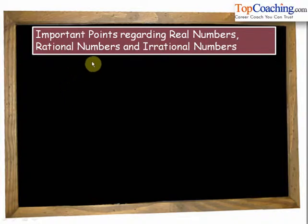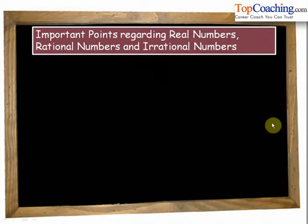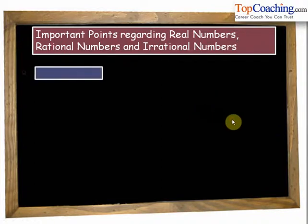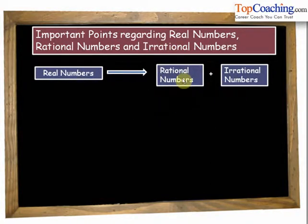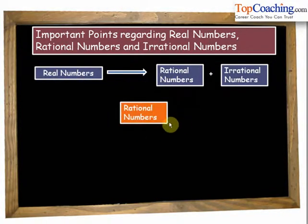Before we begin, let's recall some very important points regarding real numbers, rational numbers and irrational numbers. Real numbers are the numbers that consist of rational numbers plus irrational numbers. All irrational numbers together with the rational numbers constitute the set of real numbers. Now let's see about rational numbers.